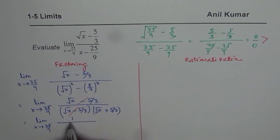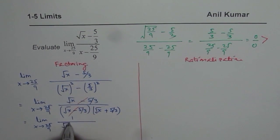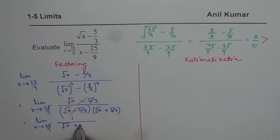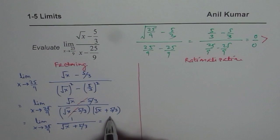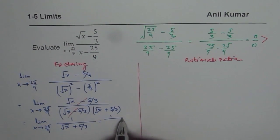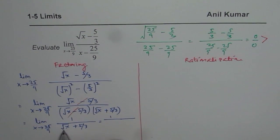And in the numerator we have 1. Denominator is square root of x plus 5 over 3. Substitute 25 over 9 here. So we get 1 over square root of